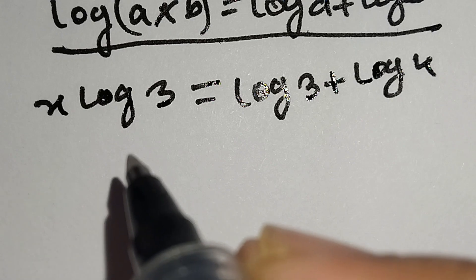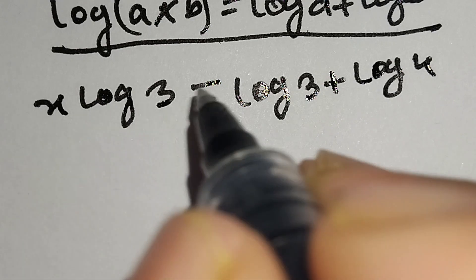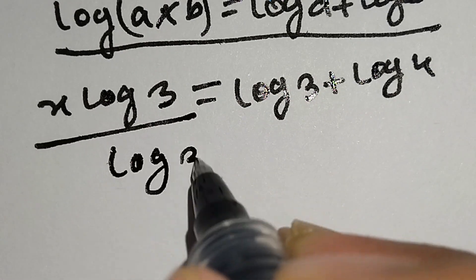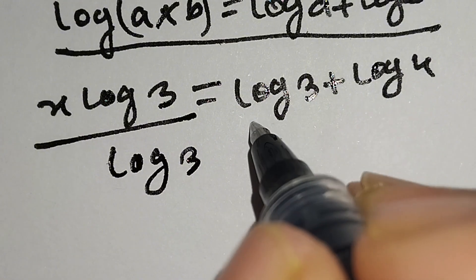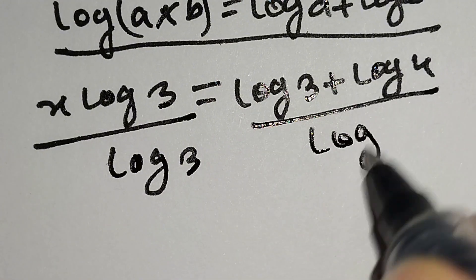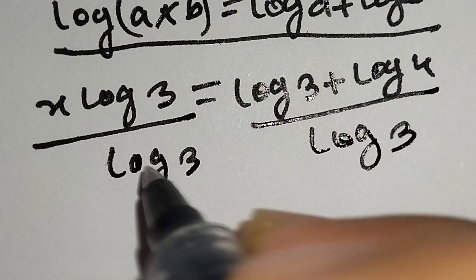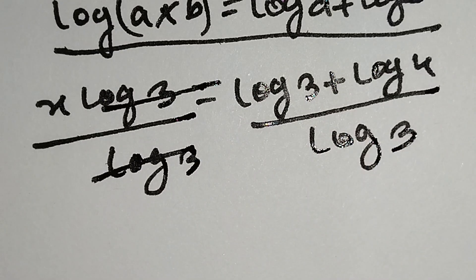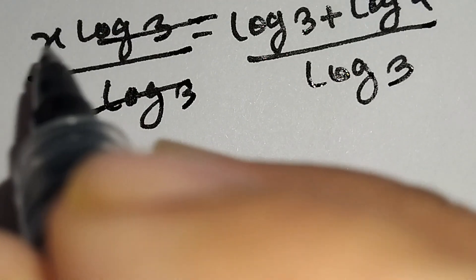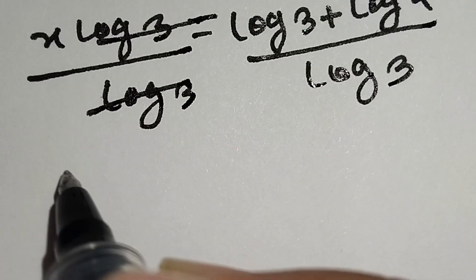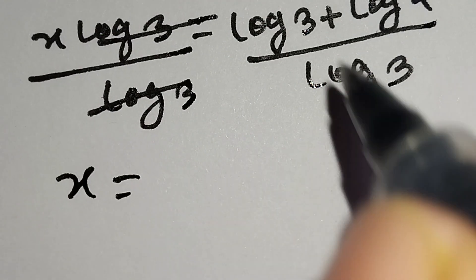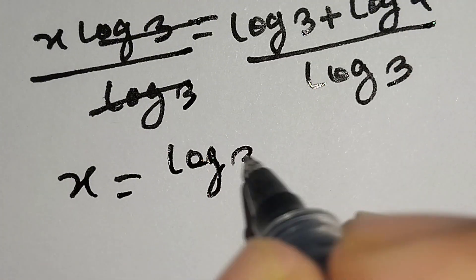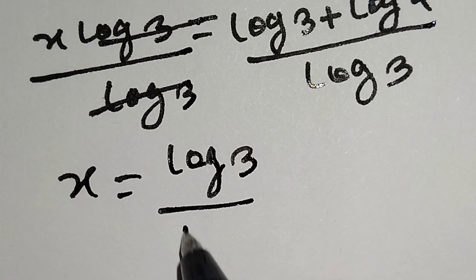Now we will divide both sides by log 3 to eliminate this log 3. So log 3 over log 3 cancels out, and we remain with x is equal to 1 plus log 4 over log 3.